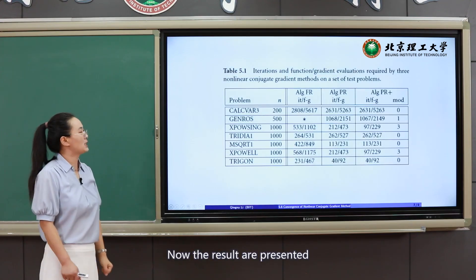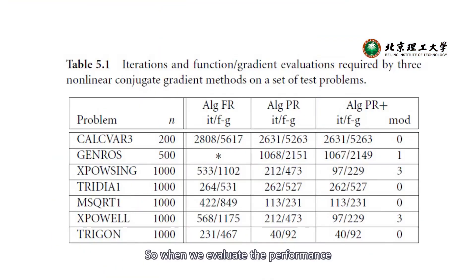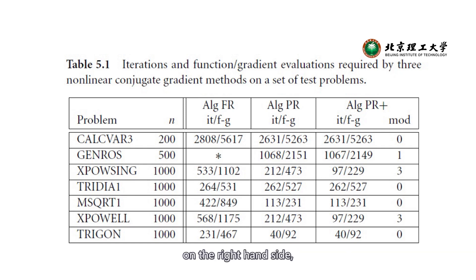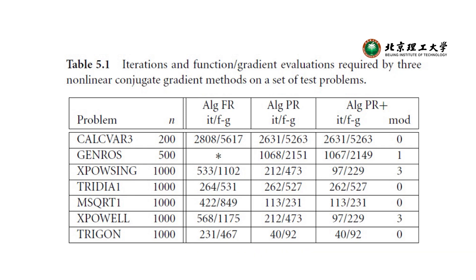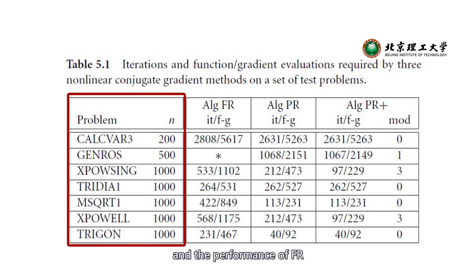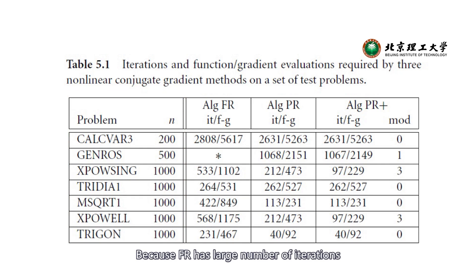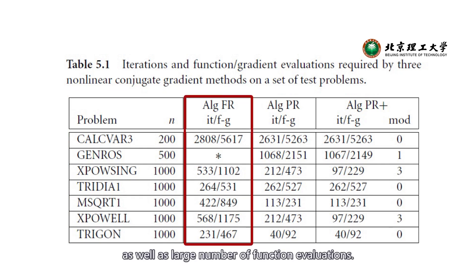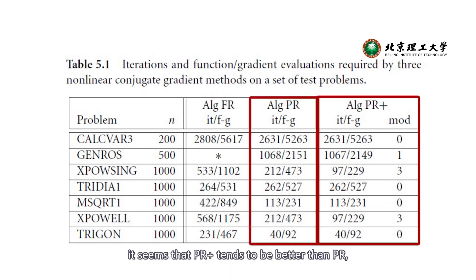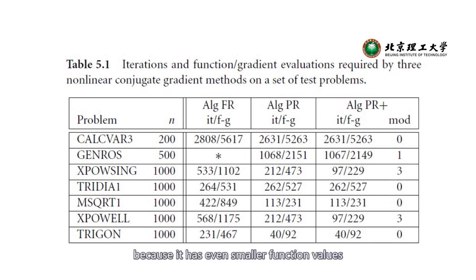The results are presented in the following tables. When evaluating the performance of nonlinear conjugate gradient methods, we consider the number of function evaluations and the number of total iterations for each column. As we can see for the tested examples, the performance of FR is not as good as PR or PR-plus, because FR has a larger number of iterations as well as a larger number of function evaluations. Comparing PR-plus with PR, PR-plus tends to be better, having even smaller function evaluation counts and fewer iterations.